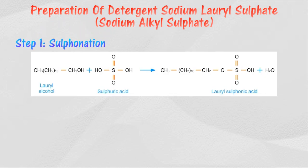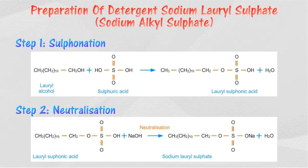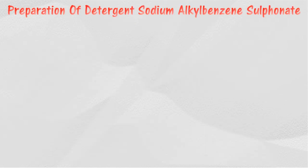In sulfonation, the long-chain alcohol reacts with concentrated sulfuric acid to form water and alkyl sulfonic acid. The sodium lauryl sulfate detergent is then prepared through a neutralization reaction between the lauryl sulfonic acid and sodium hydroxide solution.